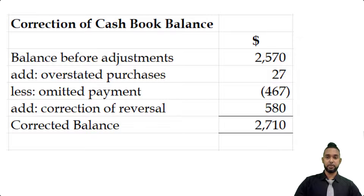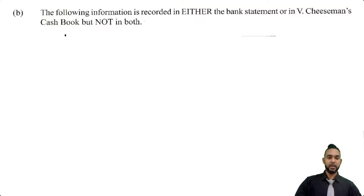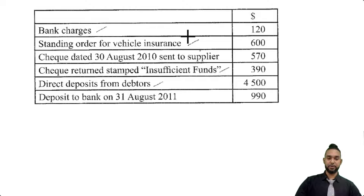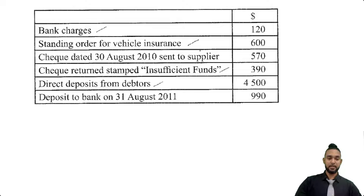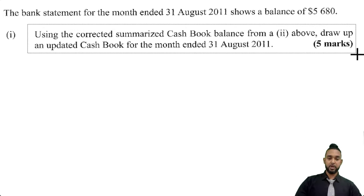Let's take a look at the next part. The following information is recorded in either the bank statement or in V. Cheeseman's cash book, but not in both. We have: bank charges; a standing order for vehicle insurance; a check dated 30th August 2010 sent to a supplier for $570; a check returned stamped insufficient funds, $390; direct deposits from debtors, $4,500; and a deposit to bank on 31st August 2011, $990. The bank statement for the month ended 31st August 2011 shows a balance of $5,680.